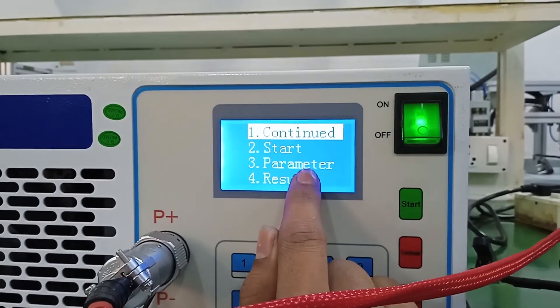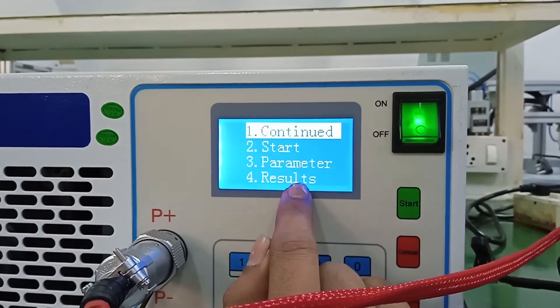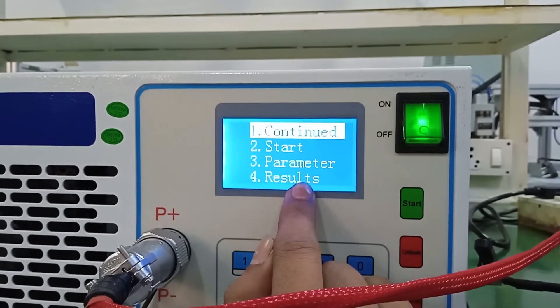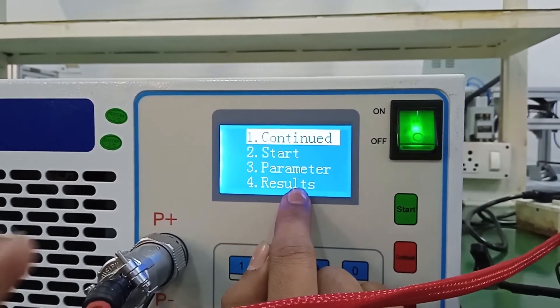Third is your parameter setting and fourth is your result. The result means your final result. When you have completed your discharging of your battery pack, you can get your parameters result from there.